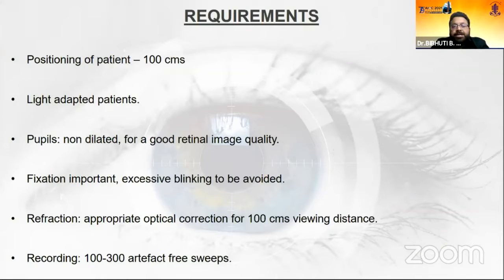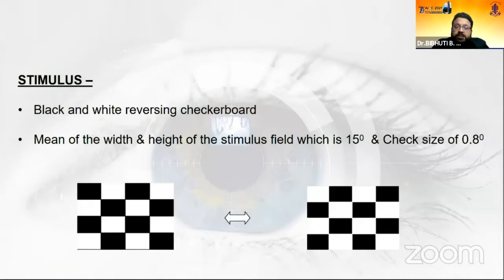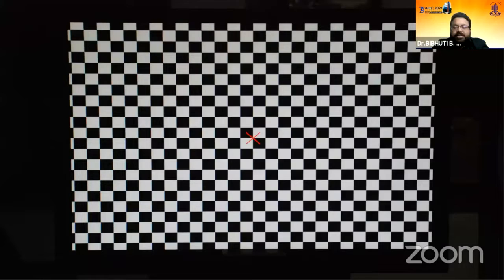For recording, the patient must be positioned at 100 centimeters, be light adapted, and the pupil must not be dilated — good retinal image quality is important. Fixation is critical and excessive blinking must be avoided. The patient must be refracted for a 100 centimeter viewing distance. The stimulus is a black and white reversing checkerboard with a field coverage of 15 degrees and a check size of 0.8 degrees.